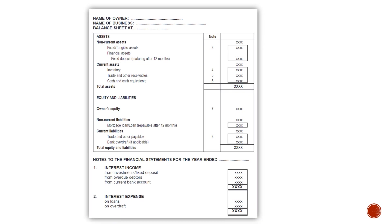Balance sheet section — the second part of your financial statements. You're going to start with the name of the owner, name of the business, and then balance sheet at the date that you're setting this up for.